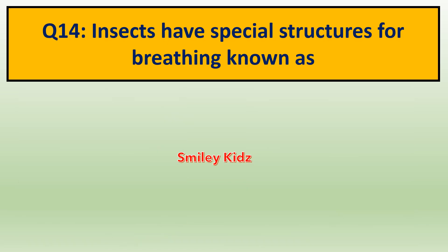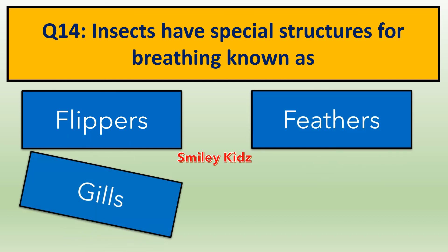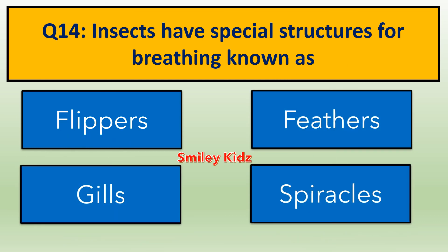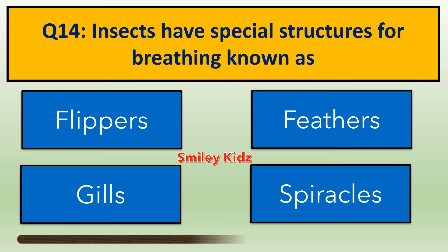Question number 14. Insects have special structures for breathing known as — options are: A. Flippers, B. Feathers, C. Gills, D. Spiracles. Your time starts now. Your time is up. The right answer is Spiracles. Insects have special structures for breathing known as spiracles.